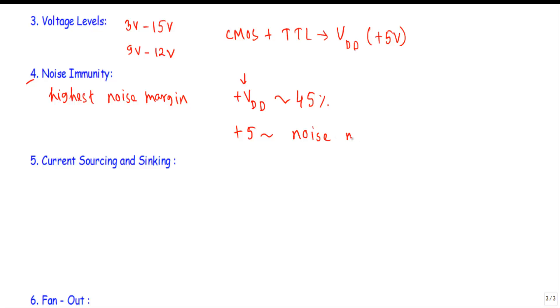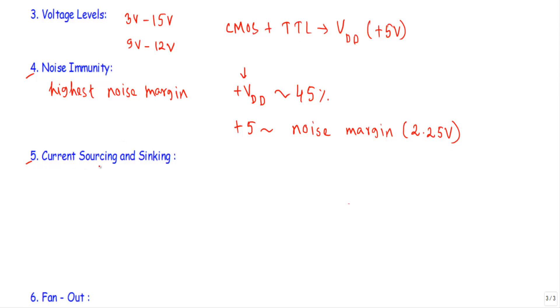The next point is current sourcing and sinking. When the output of a CMOS logic is at low state, it draws current from the driving gate in the order of one micro ampere only. That means the sink current of CMOS logic is only one micro ampere. And when the output is at high state...